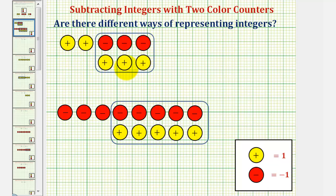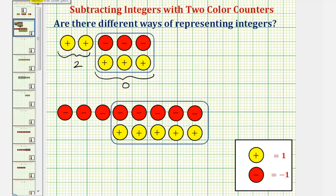Looking at these counters here, notice that three red counters and three yellow counters would simplify or be equal to zero, leaving us with two yellow counters, which represents positive two. So together, all these counters would be another way to represent positive two.